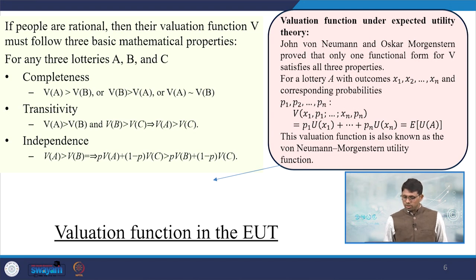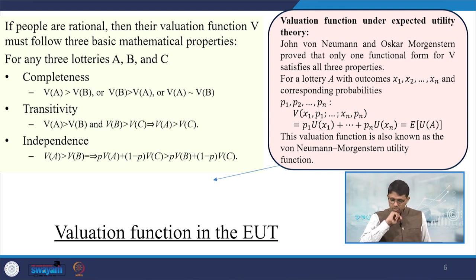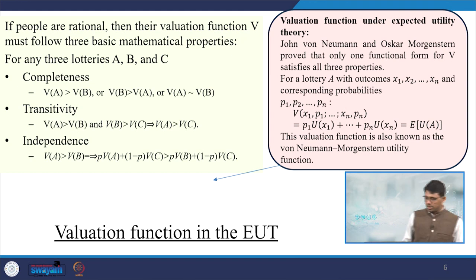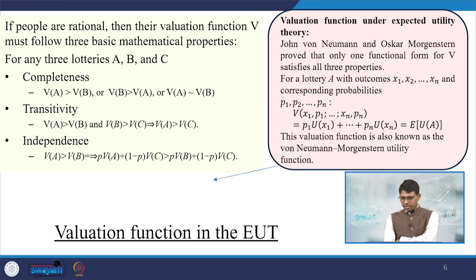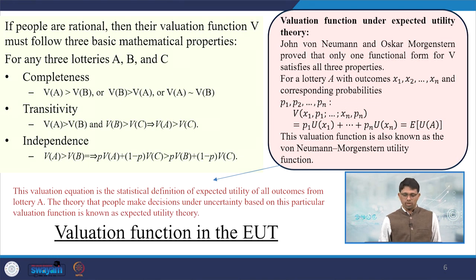Von Neumann and Morgenstern proved that only one functional form for V satisfies all three properties: completeness, transitivity, and independence. This valuation function V is a function of individual outcomes with their respective probabilities — the typical von Neumann-Morgenstern approach to presenting the expected utility theorem. This valuation function is also known as the von Neumann-Morgenstern utility function, and the valuation equation is the statistical definition of expected utility of all outcomes from a lottery. The theory states that people make decisions based on this particular evaluation function in expected utility theory.